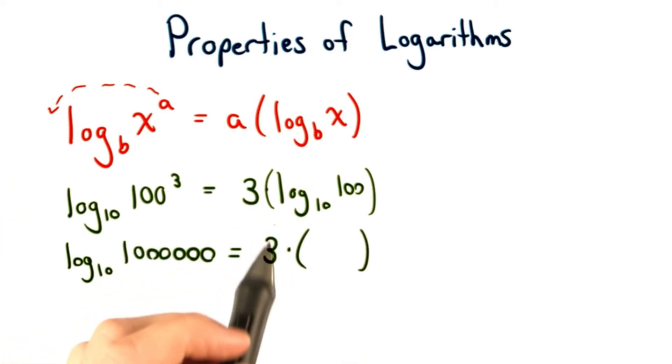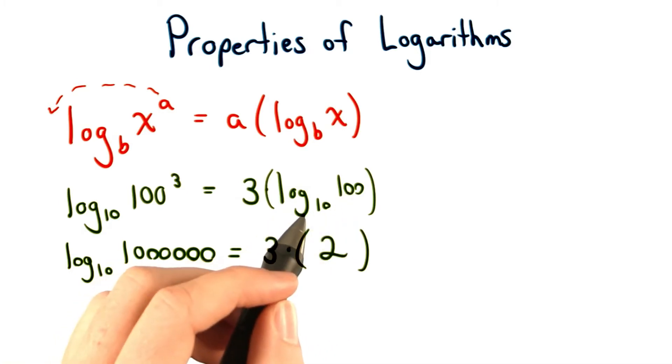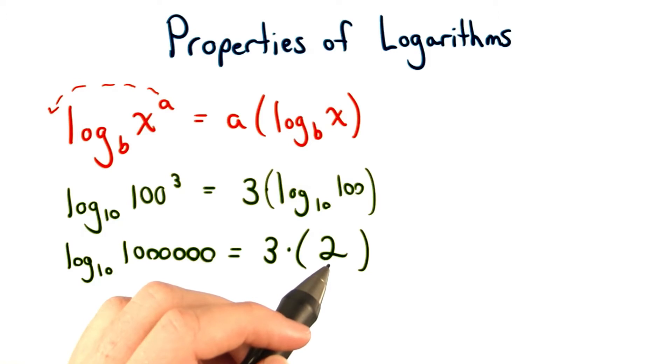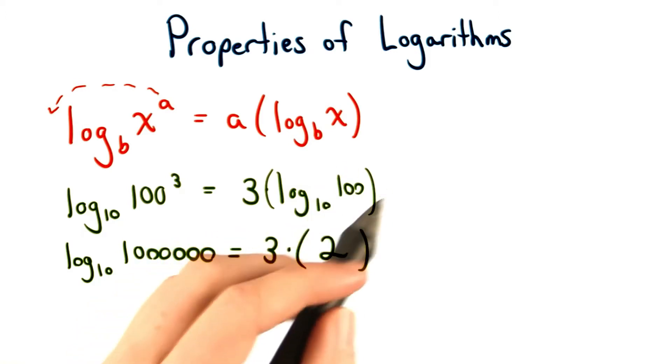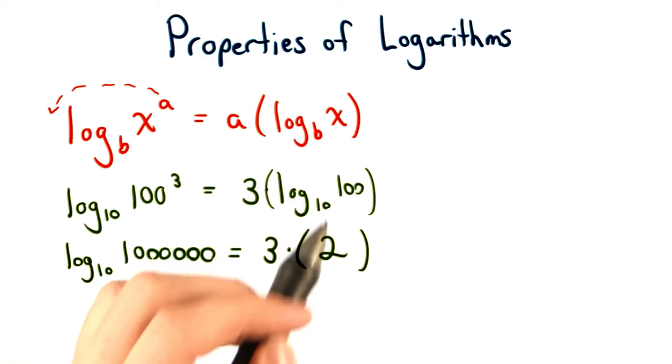On the left hand side, we'll have 3 times the log base 10 of 100. Log base 10 of 100 is 2. We know this since 10 squared equals 100. We're looking for the exponent that we'd raise 10 to in order to get this number. So we know 3 times 2 equals 6, and now let's check the left hand side.